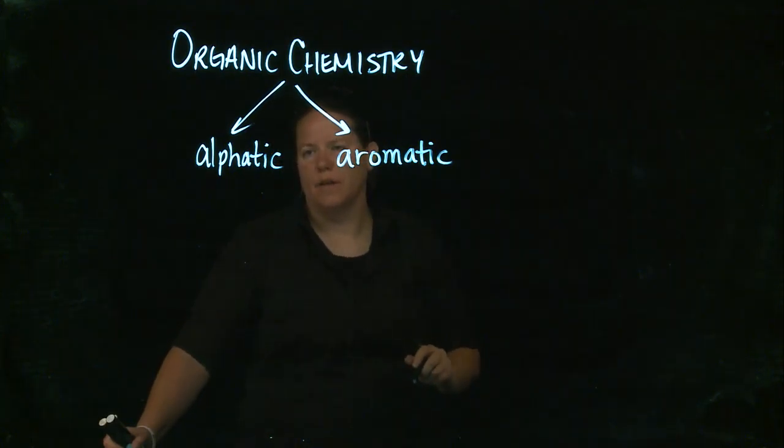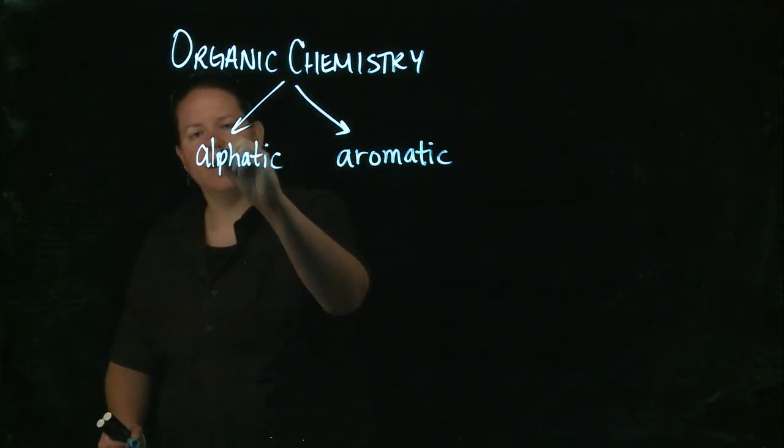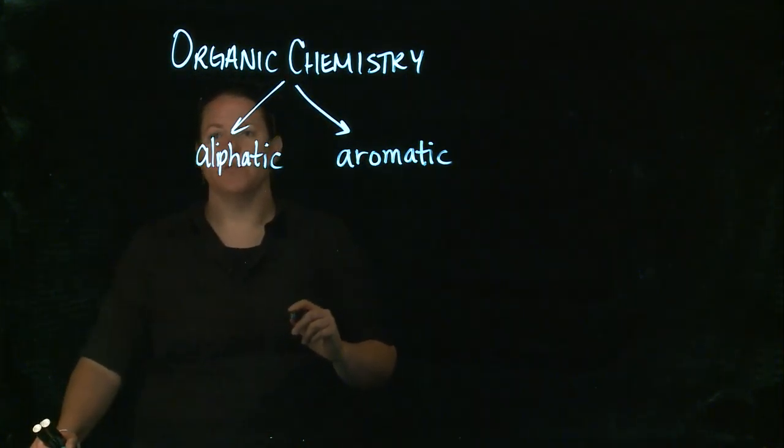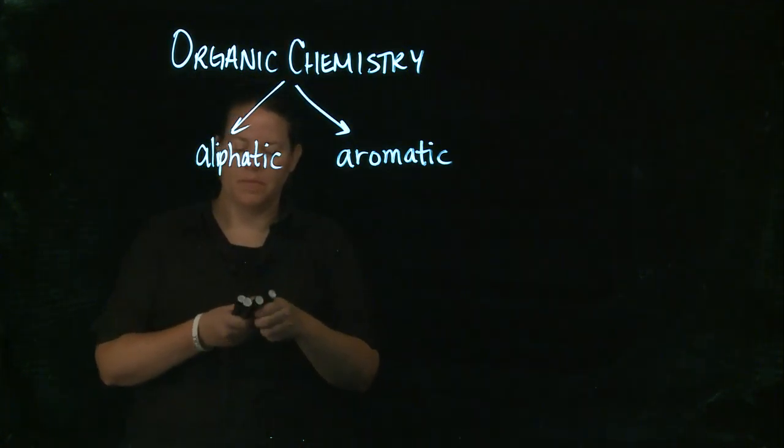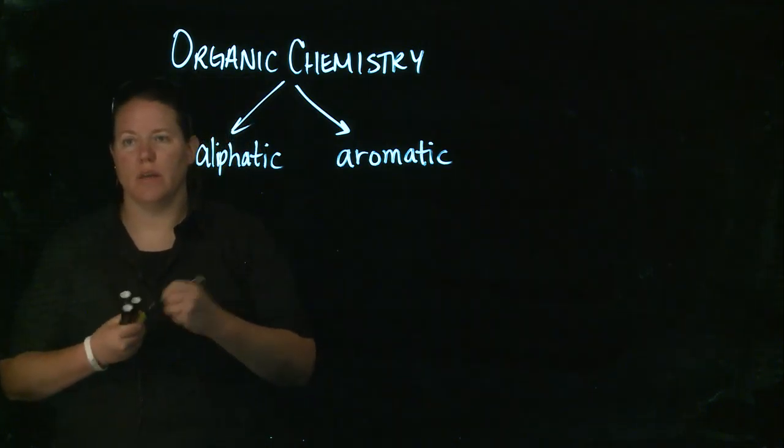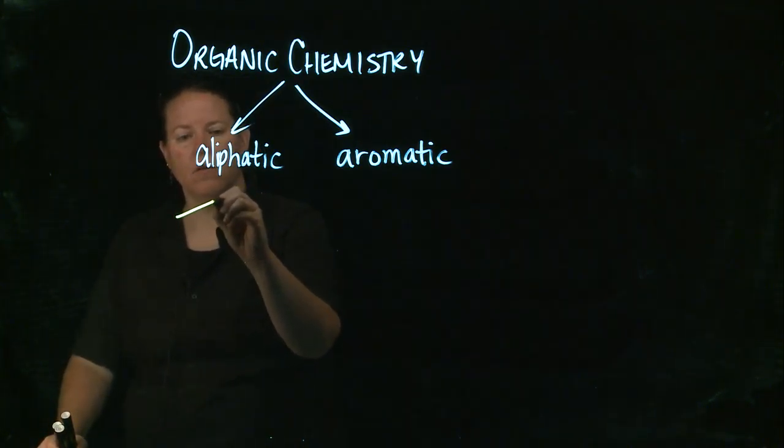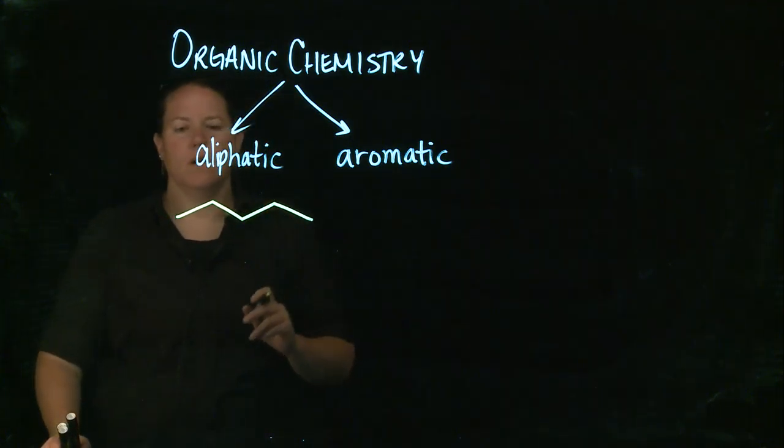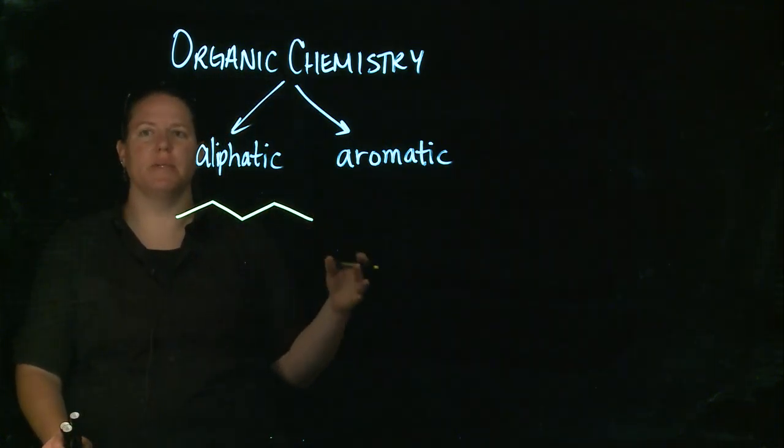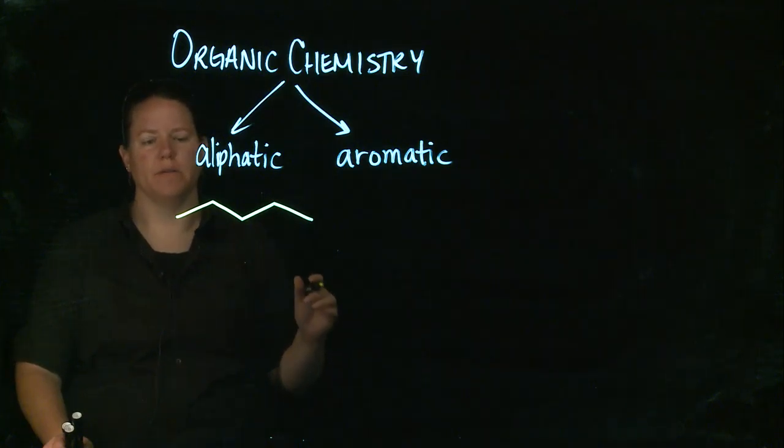What aliphatic compounds are, this is an open carbon chain. So in other words this is something that tends to be either a straight chain or perhaps even a cyclic hydrocarbon,